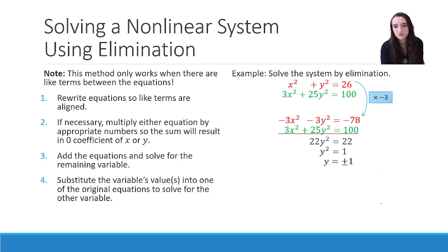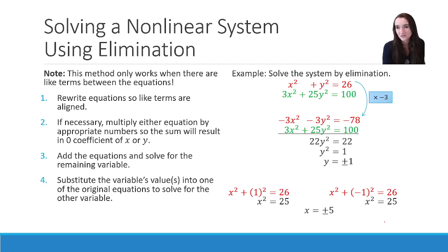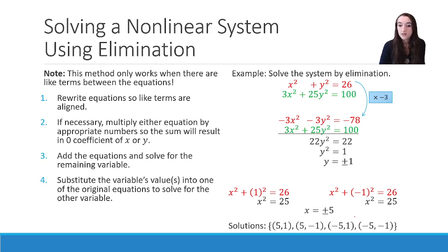We go back and substitute to find the remaining variable. Taking y equals positive 1: x squared plus 1 squared equals 26, so x squared plus 1 equals 26, meaning x squared equals 25. Taking y equals negative 1: x squared plus negative 1 squared equals 26, which again gives x squared equals 25. This will happen quite often when working with ellipses. We square root both sides — and again, since we are placing the square root there, it must be plus or minus. So x equals plus or minus 5. Our solution set is every combination: (5, 1), (5, −1), (−5, 1), and (−5, −1) — four total solutions.